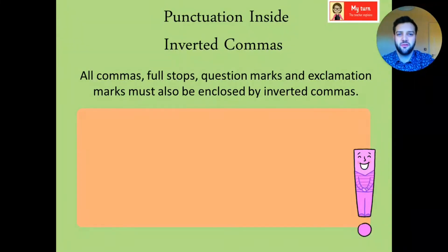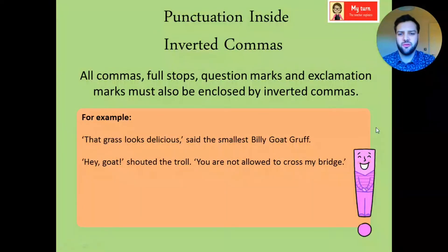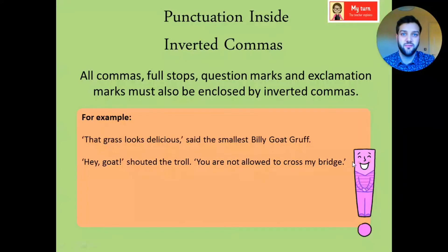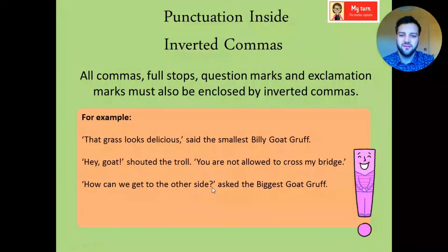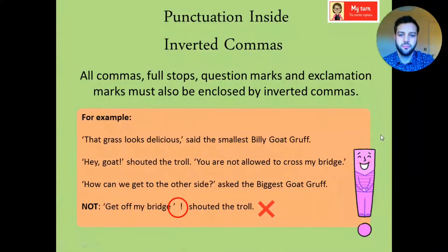So, punctuation inside the inverted commas. All commas, full stops, question marks, and exclamation marks must be enclosed — it must be inside the inverted commas. For example: 'That grass looks delicious,' said the smallest Billy Goat Gruff. The comma is inside that inverted comma. Next: 'Hey goat!' shouted the troll, 'you are not allowed across my bridge.' So we've got an exclamation mark inside, and a full stop inside the inverted commas too. Similarly, the question mark is inside: 'How can we get to the other side?' asked the biggest goat gruff. This is not how you do it — you do not put the inverted commas and then the punctuation outside. It has to go inside, because it helps show how you say the words.